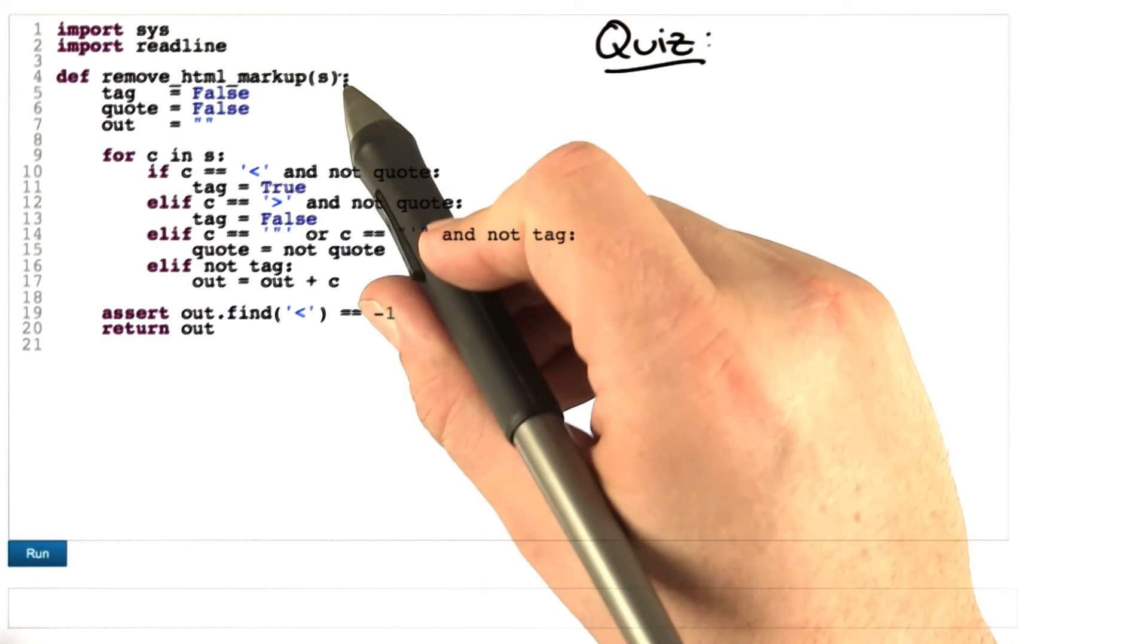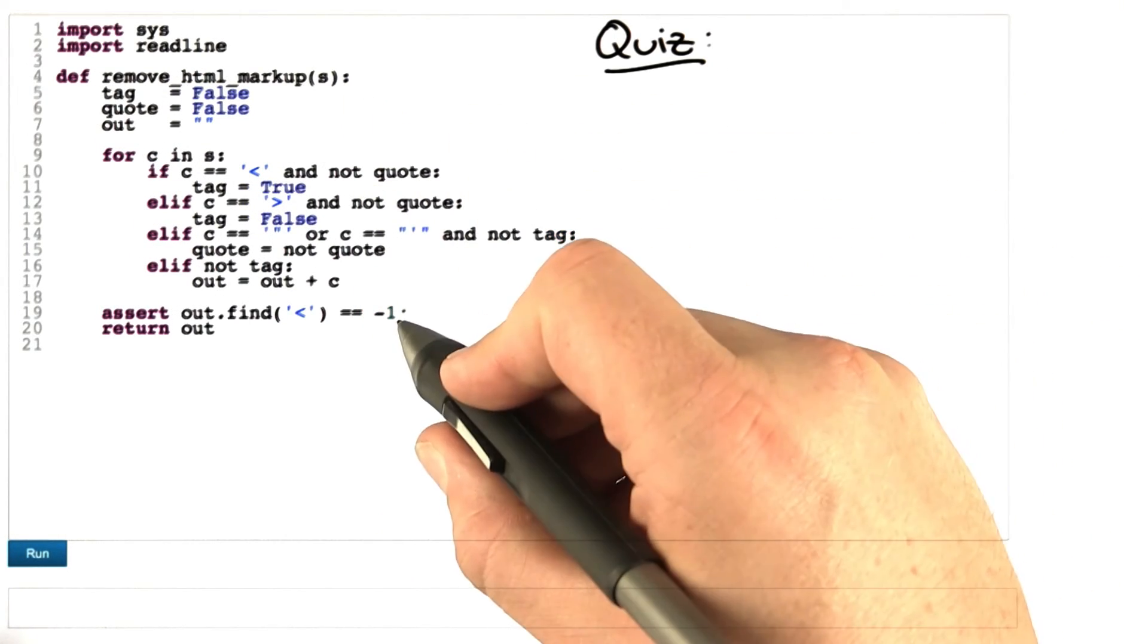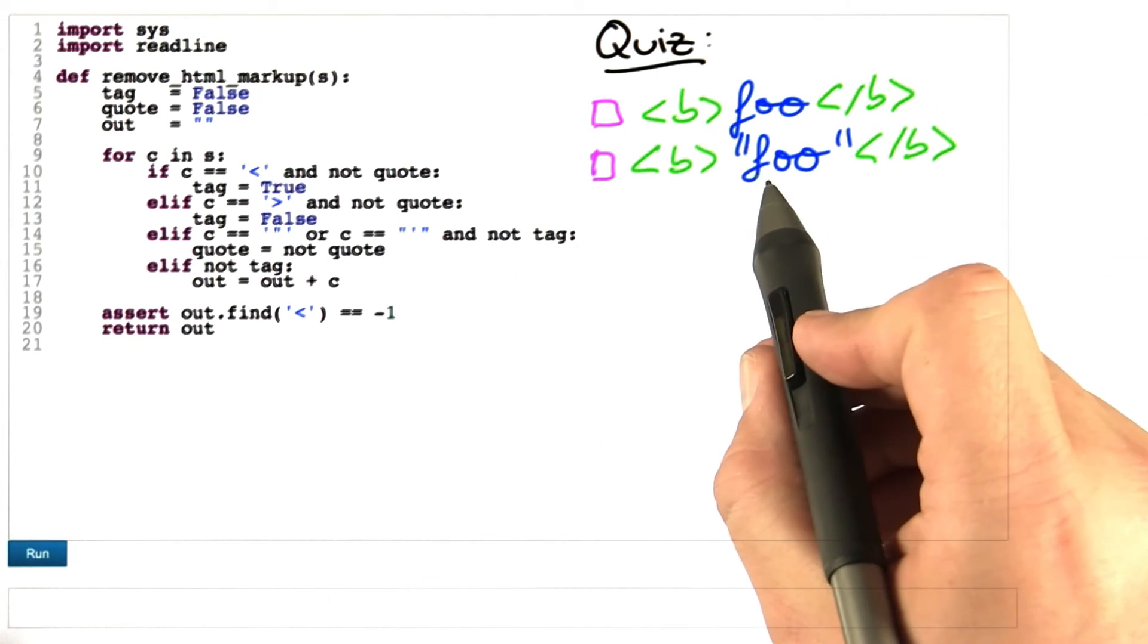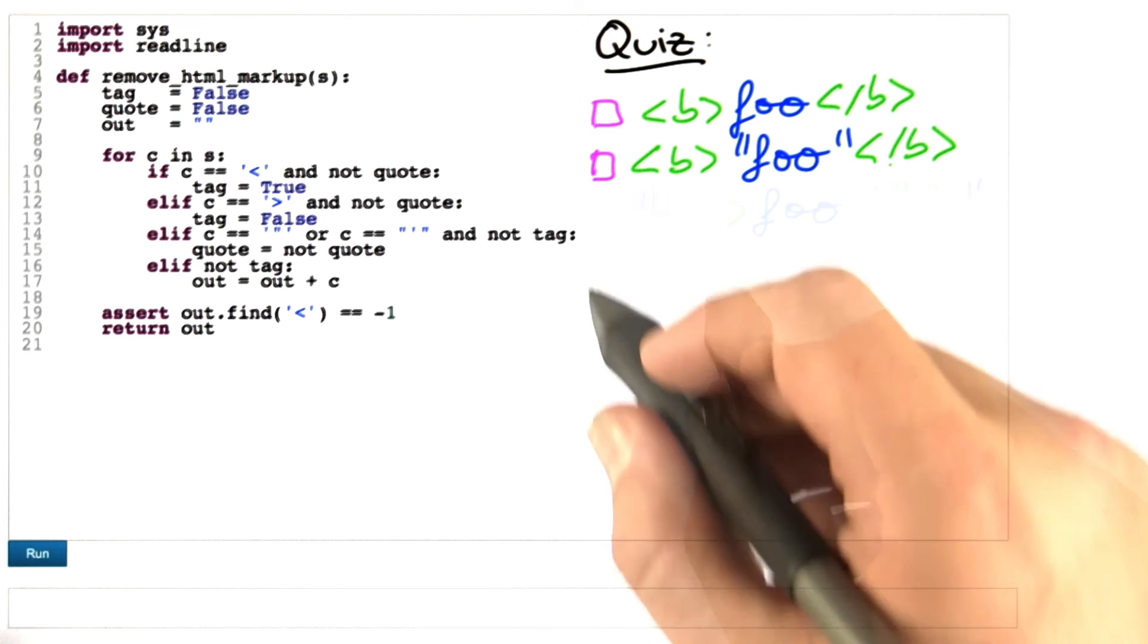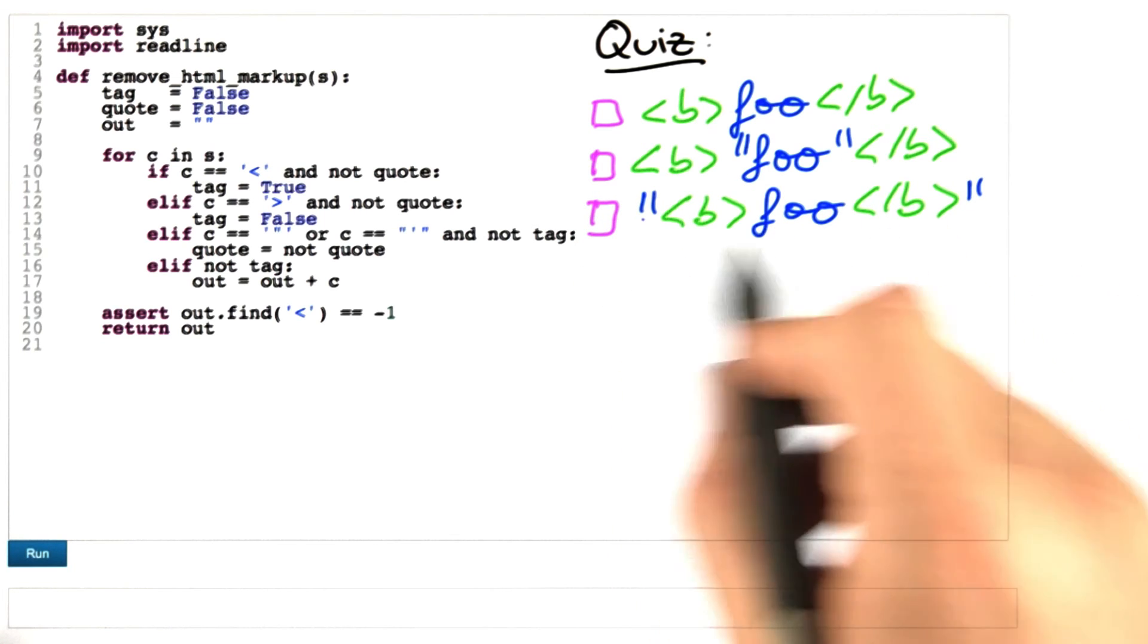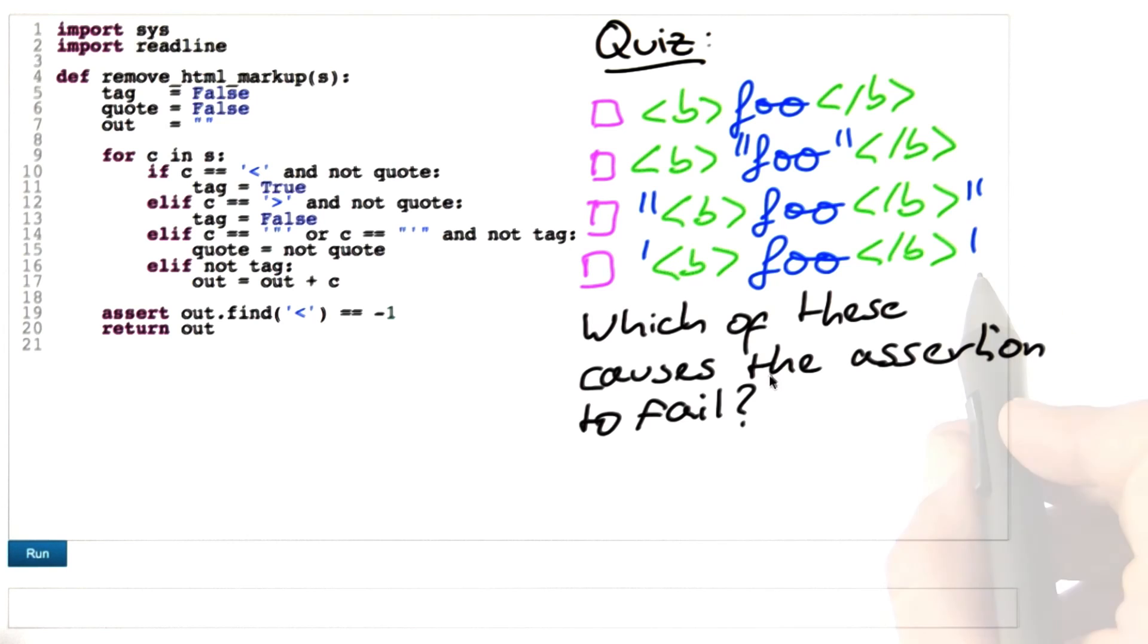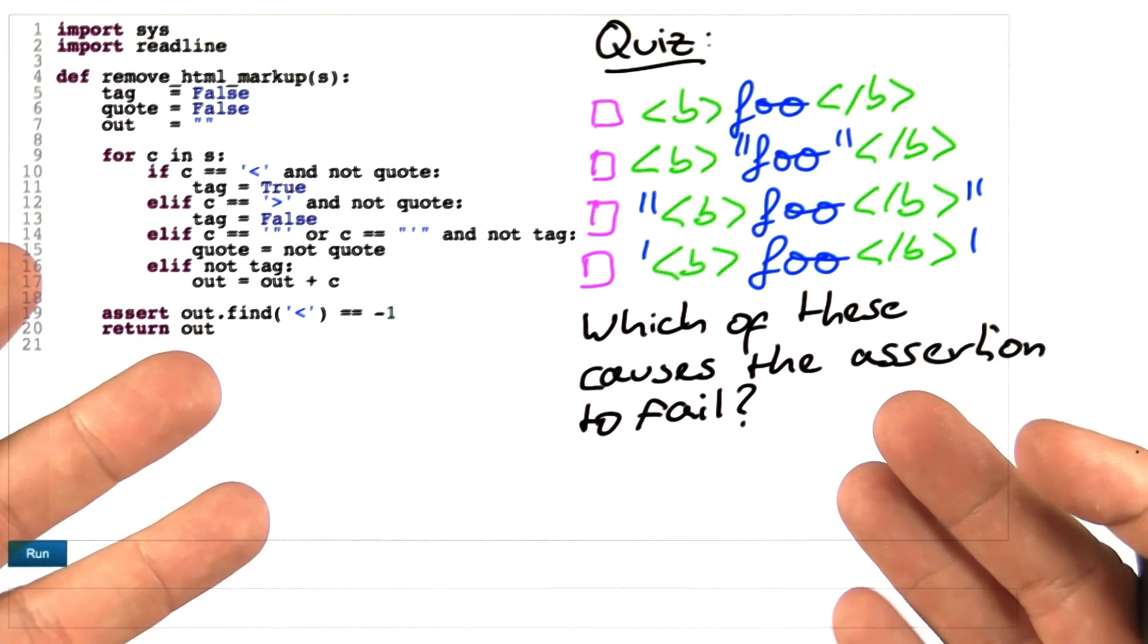With this assertion, which input would cause the assertion to raise an exception? Is it foo in bold? Is it foo in quotes in bold? Is it foo in bold in quotes? Or is it foo in bold in single quotes? Which of these causes the assertion to fail? Over to you.